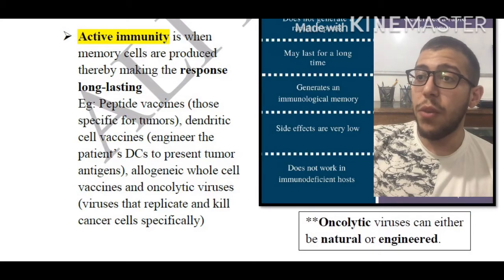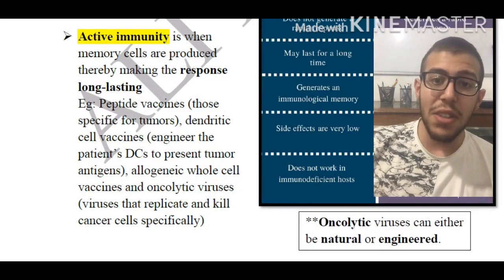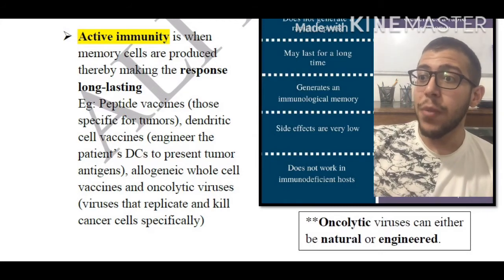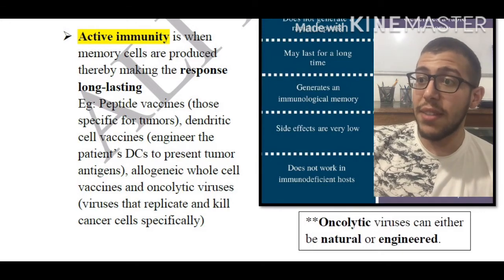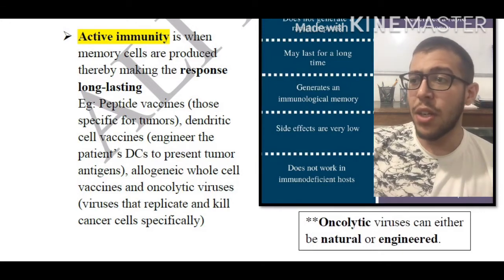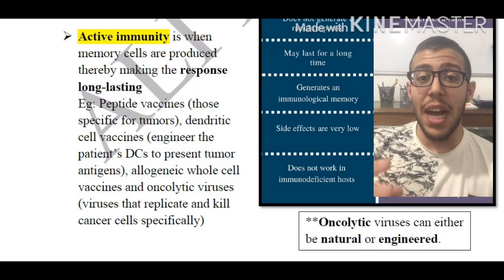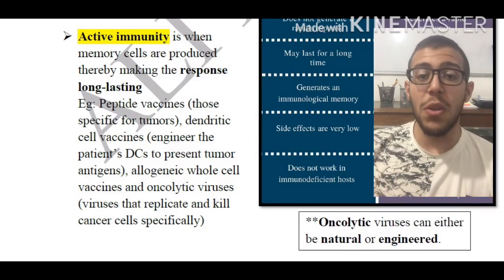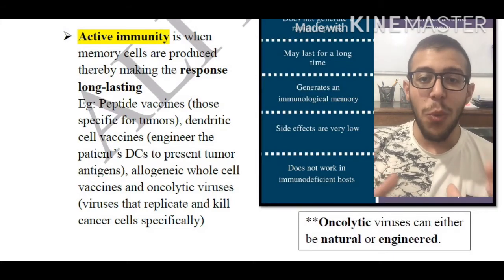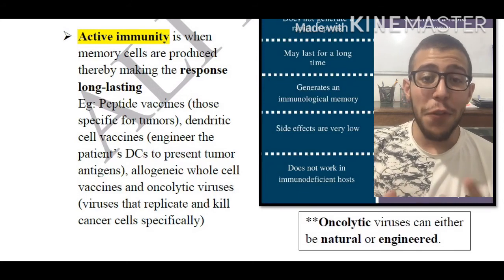Examples of active immunity include peptide vaccines specific for tumors, dendritic cell vaccines where we engineer the patient's dendritic cells to present tumor antigens to facilitate an immune response, allogenic whole cell vaccines, and oncolytic viruses which replicate and kill cancer cells specifically. These viruses can either be natural or engineered. This concludes our short episode on active versus passive immunity — thank you for watching, this has been Ali from BBiology.